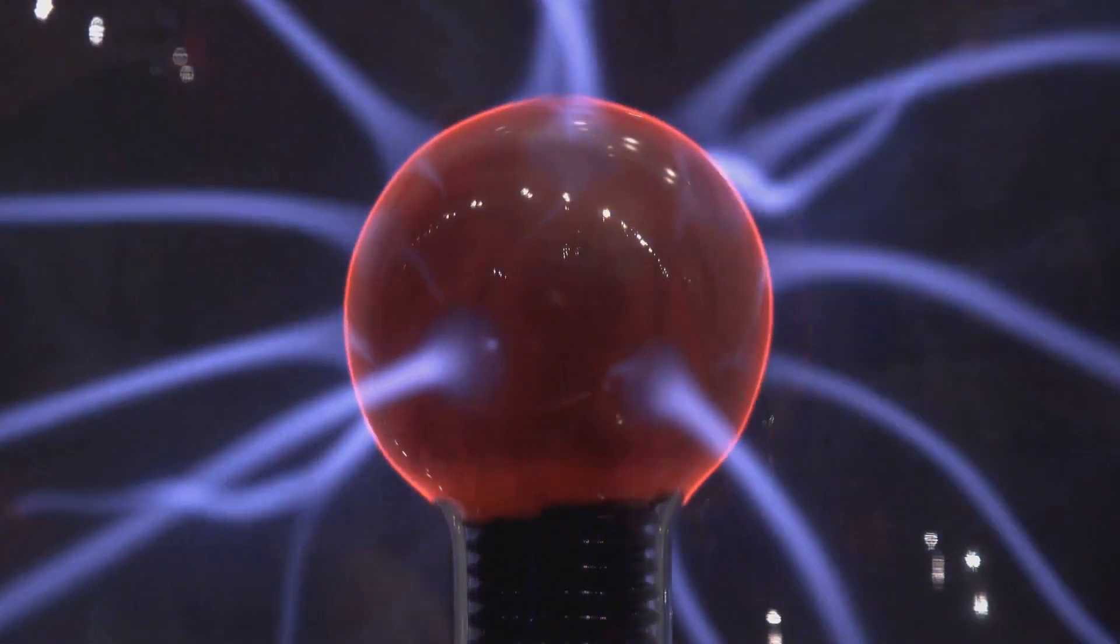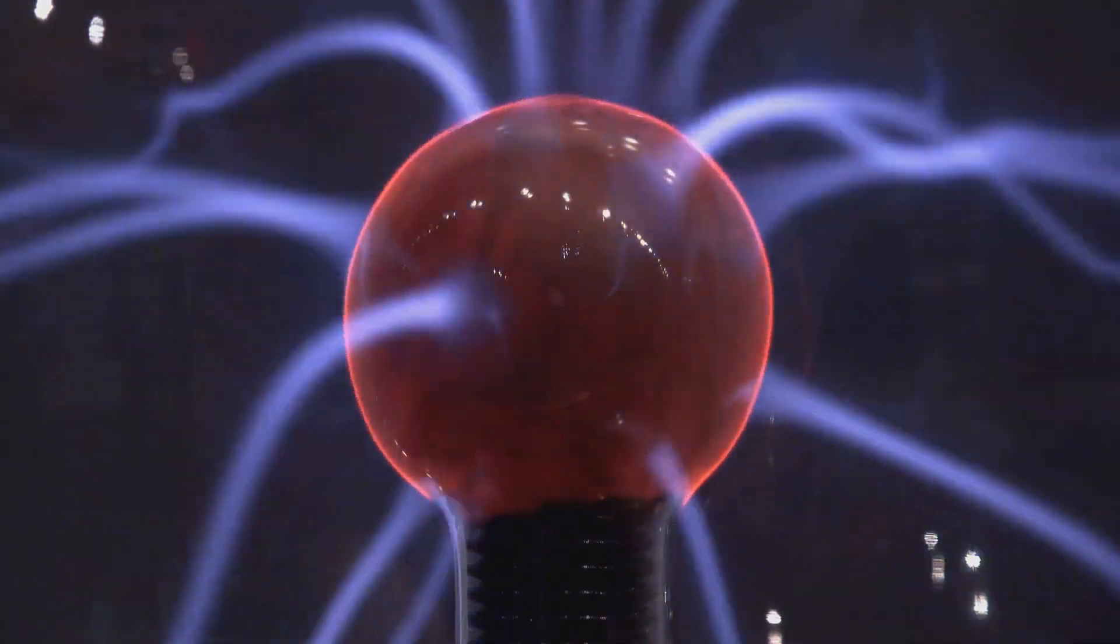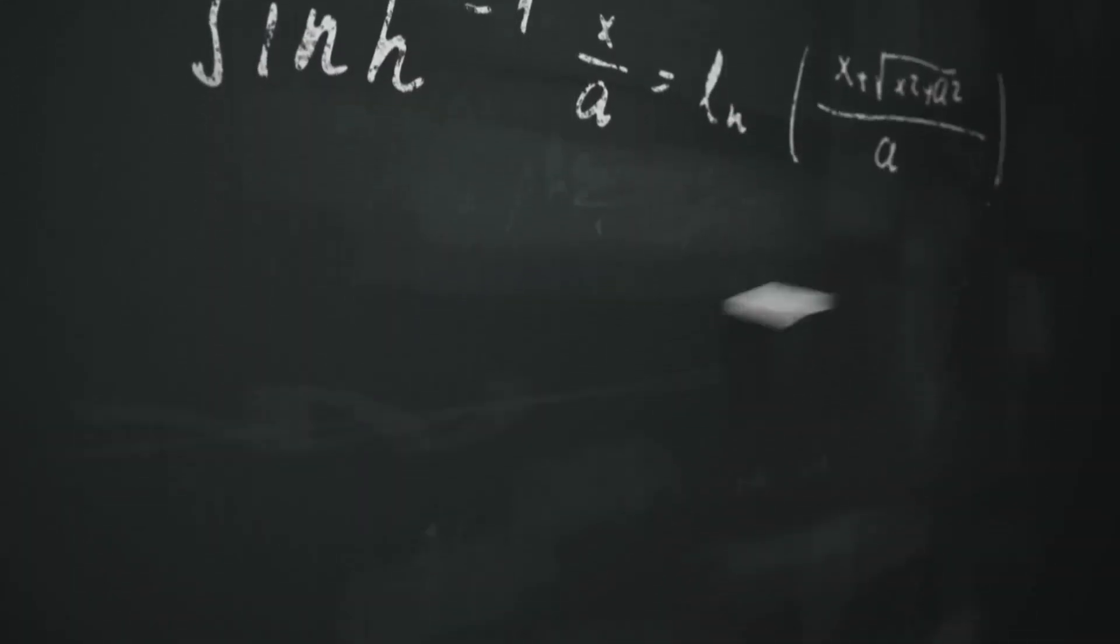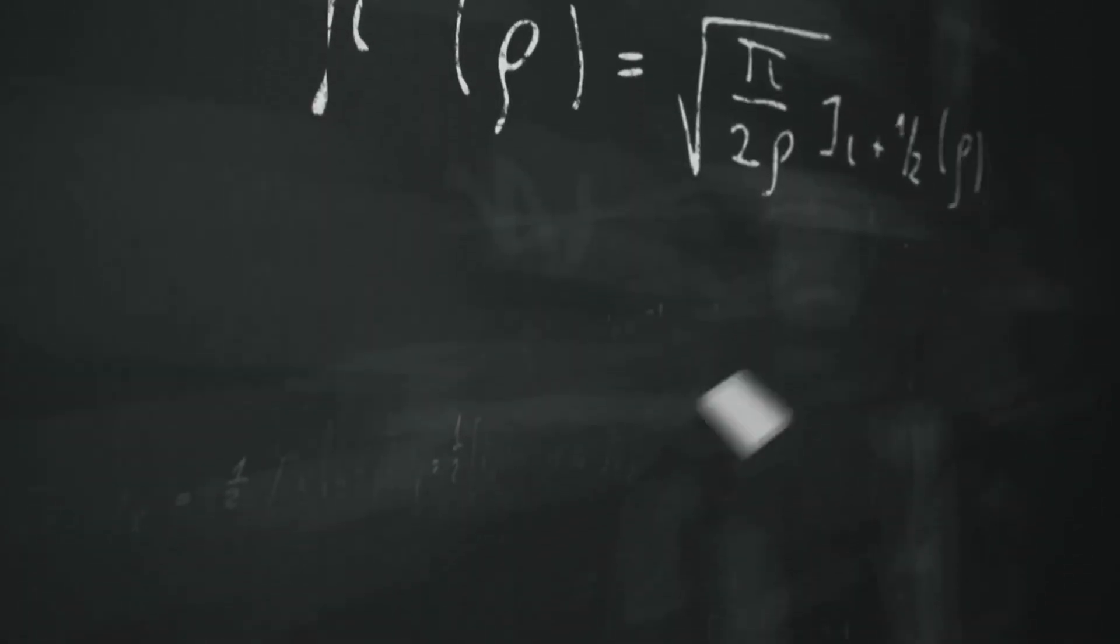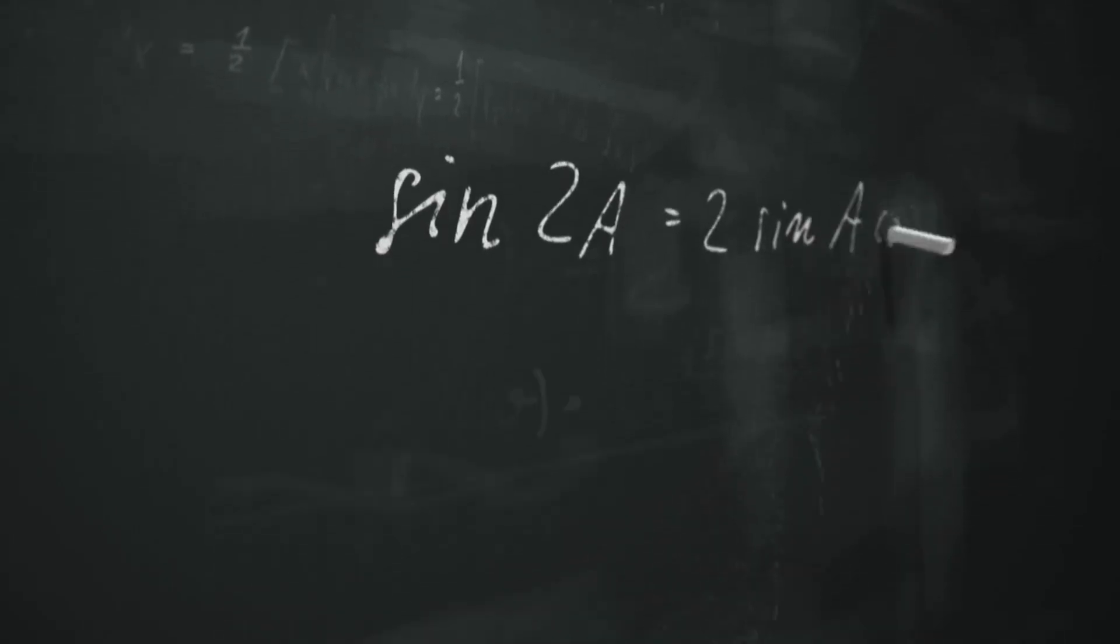In electromagnetism, the principle helps explain the behavior of electric and magnetic fields. In quantum mechanics, it plays a crucial role in Feynman's path integral formulation, which provides a way to calculate the probability of a quantum event.